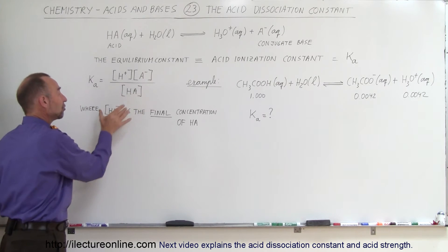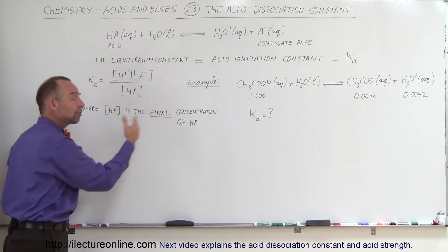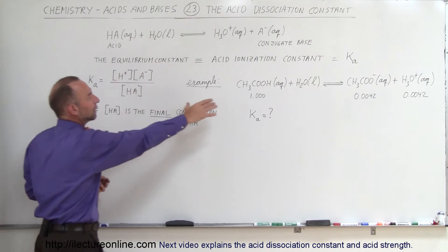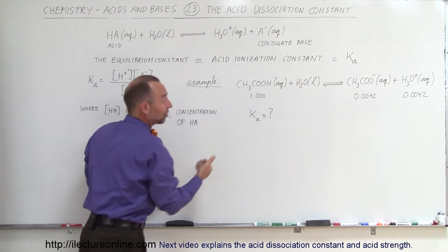But HA, the concentration of HA, is the final concentration of the acid, not the initial concentration of the acid. So it's not going to be 1 mole in the example that we have here. So the question is, what would be the acid dissociation constant of this particular example?